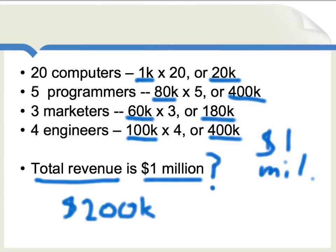Centrally planned economies don't have access to these kinds of market prices, and thus central planning generally tends not to work.